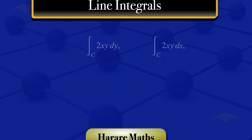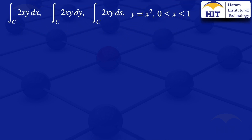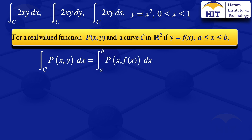To evaluate those line integrals, I will start by looking at the formulas. For a real variable function p of xy and a curve C in R2, if y equals f of x and x varies from a to b, the integral of p of xy with respect to x along the curve C equals the integral from a to b of p of x, f of x with respect to x.